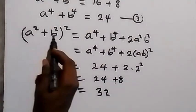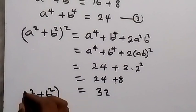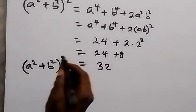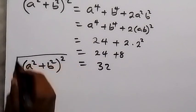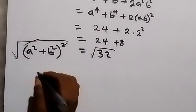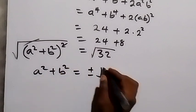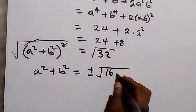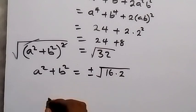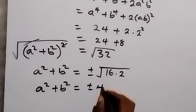So we have a squared plus b squared, all squared, equals 32. In the next step, we take the square root on both sides. The square cancels the square root on the left. And this means a squared plus b squared equals plus or minus the square root of 32, which can be written as 16 times 2. The square root of 16 is 4, so we have a squared plus b squared equals plus or minus 4 root 2.